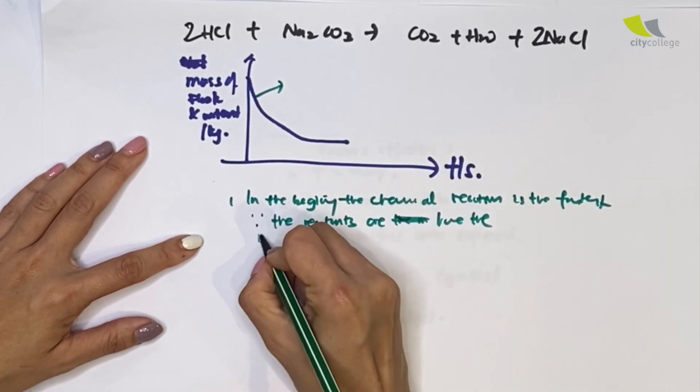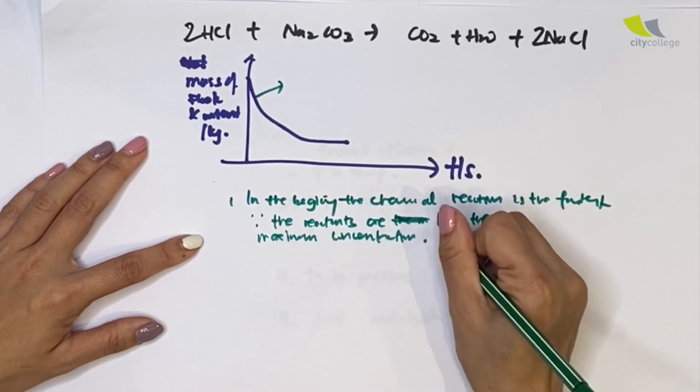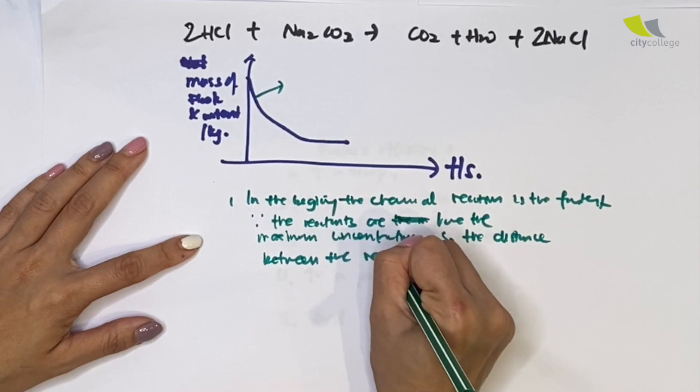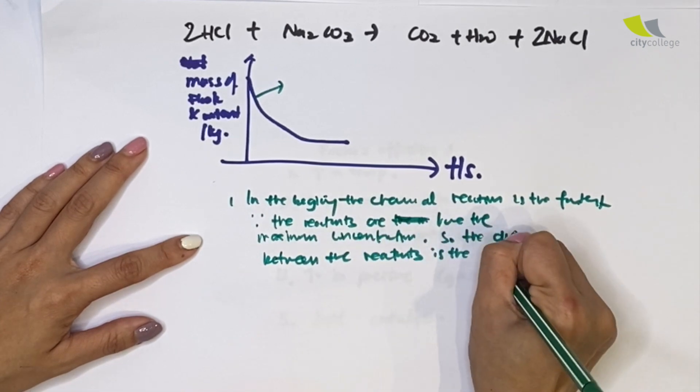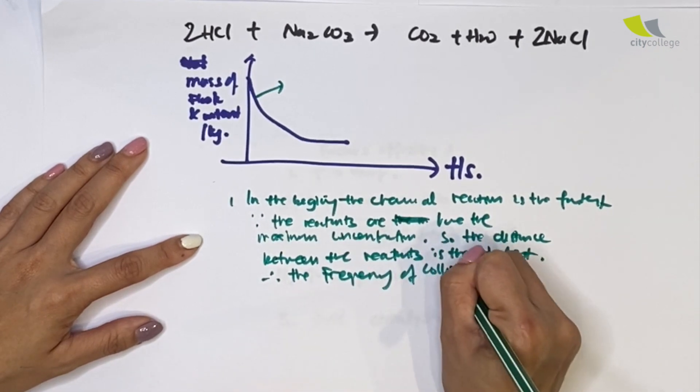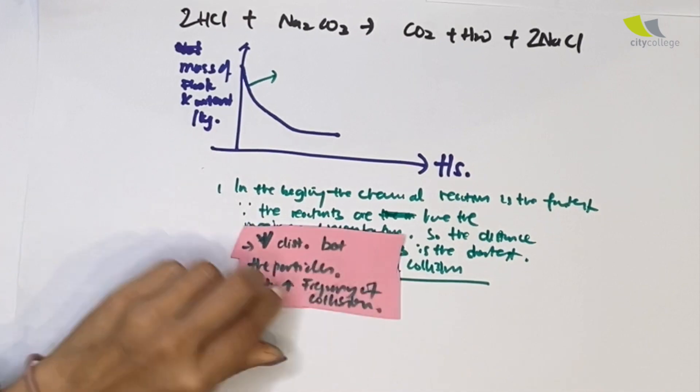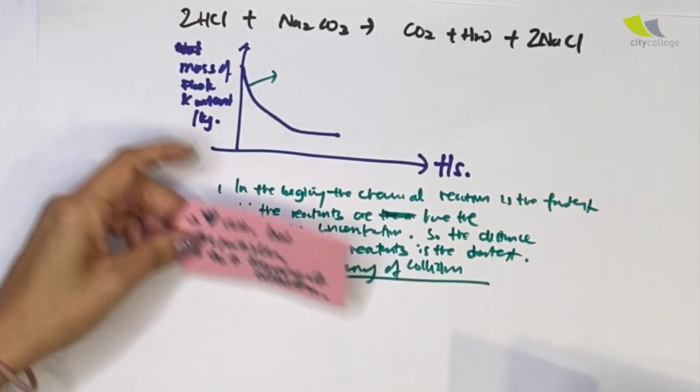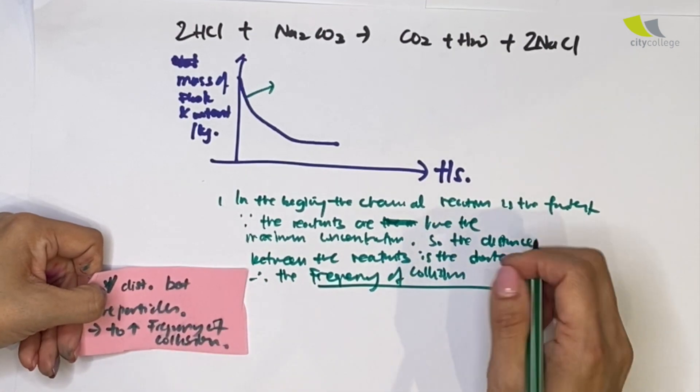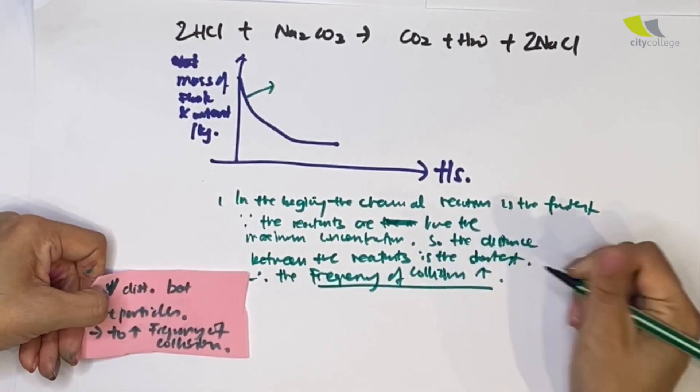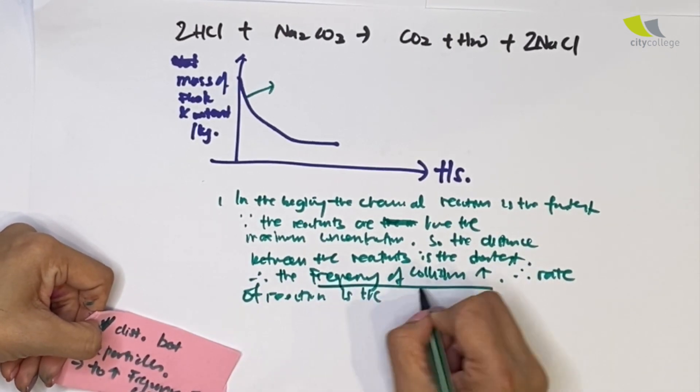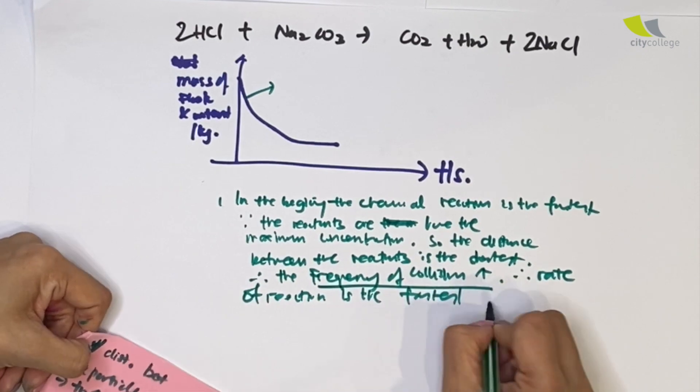So the distance between the reactants is the shortest. Therefore, the frequency of collision - remember what I keep repeating - the distance between the particles is shortest. Because the frequency of collision increases, therefore the rate of reaction is the fastest.